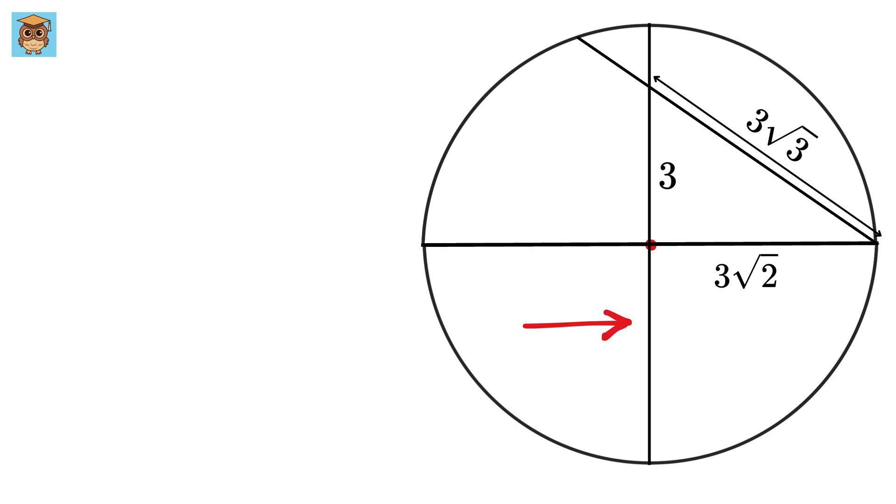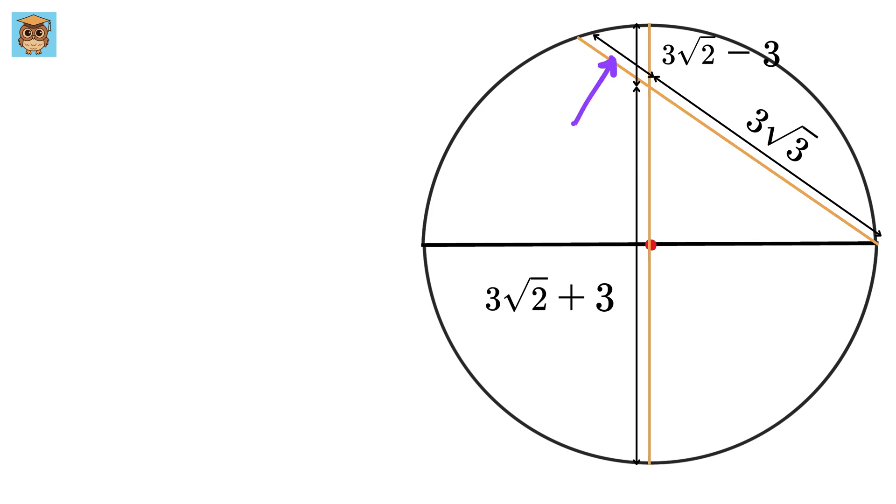Now this is the radius of this circle or 3 root 2. Then this is 3. So this will be 3 root 2 plus 3. Also this part of the chord will be 3 root 2 minus 3. Now consider these two chords of our circle and let us label this part as y. We will use this chord chord power theorem to solve for y.